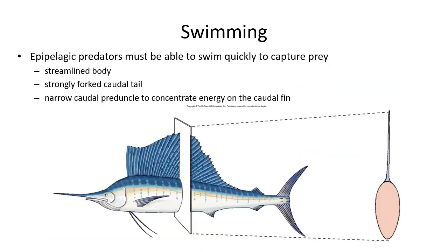The sailfish is the fastest swimmer in the ocean. Its adaptations include a very streamlined, teardrop-shaped body. Its fins are thin and can be tucked in, and those it does have are mostly for stability to reduce drag. It has a very forked caudal tail at the end, which also reduces drag when used. And a narrow peduncle — the area right before the tail — allows it to generate a lot of power every time it moves its fin or body for swimming.